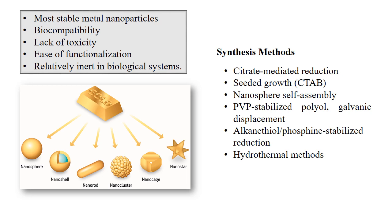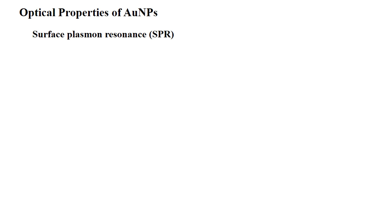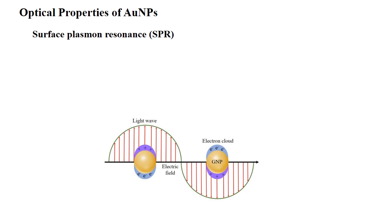Next are the properties of gold nanoparticles. The first important one is the SPR effect — surface plasmon resonance. When gold nanoparticles are irradiated with light of specific frequencies, this results in a collective oscillation of electrons along the metallic surfaces. These oscillations are termed localized surface plasmon resonance, or simply surface plasmon resonance.